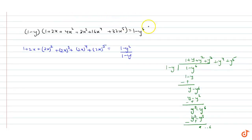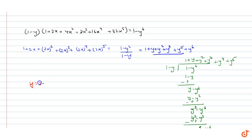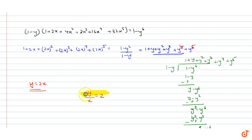Then we have our term. This is equal to 1 plus y plus y squared plus y cubed plus y to the power 4 plus y to the power 5. If we compare them, we will see that y is equal to 2x, because y squared is (2x) whole squared, y cubed is (2x) whole cubed, and similarly for y to the power 4 and y to the power 5. So this is our answer.